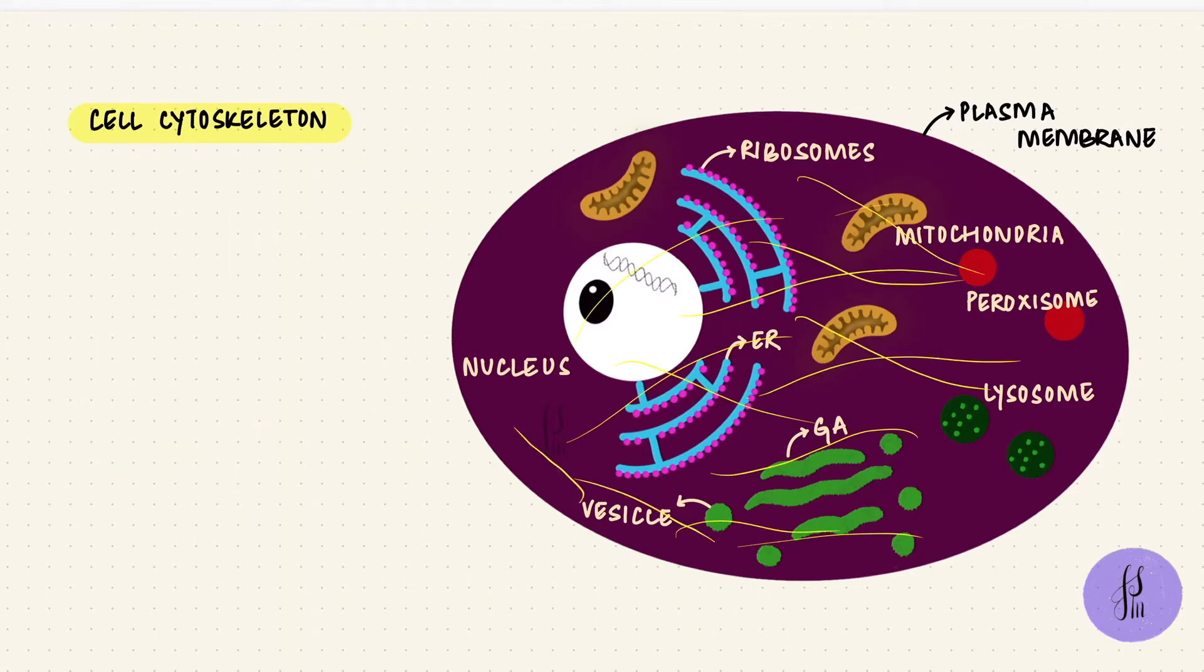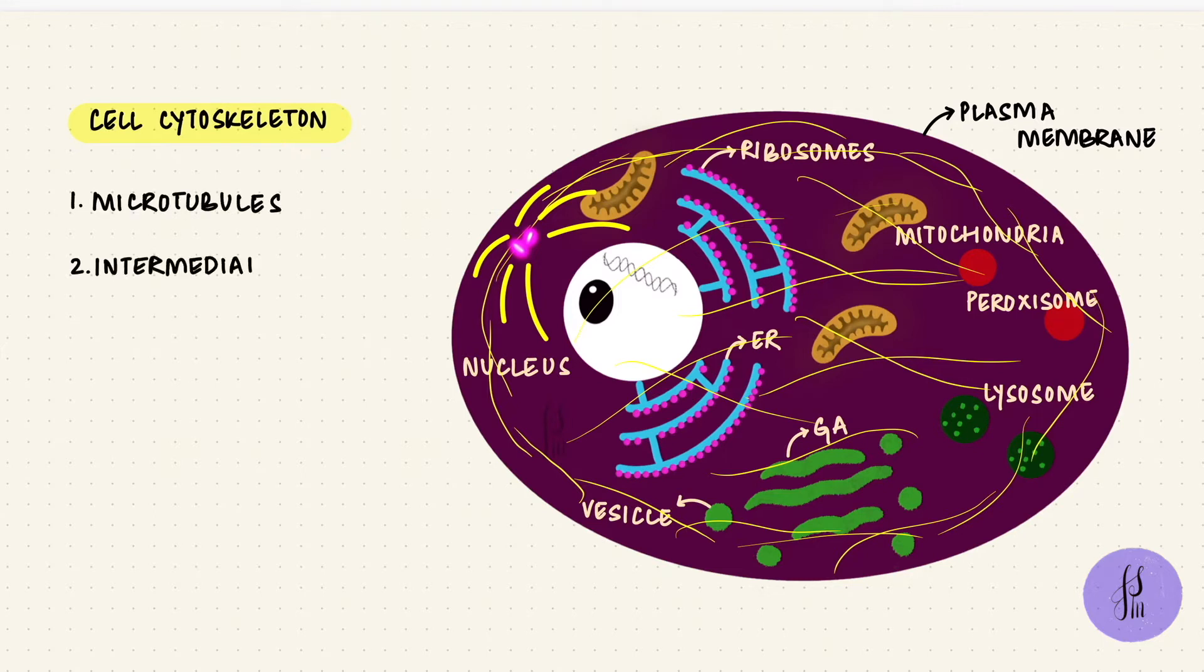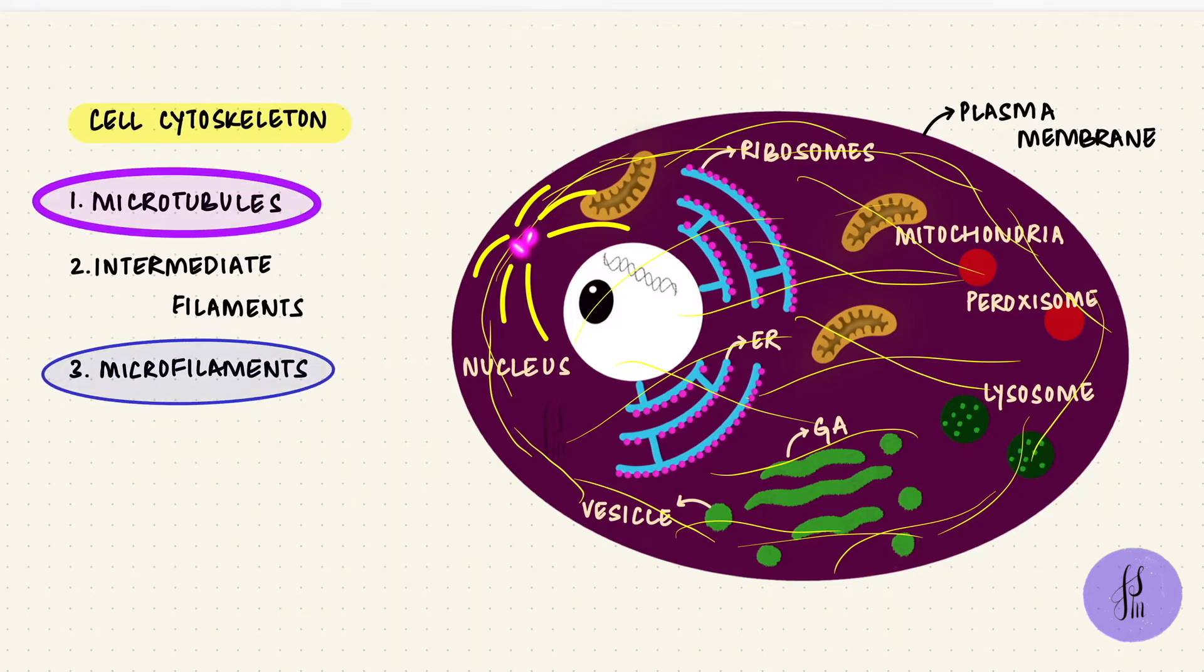The cytoplasm has these protein filaments and tubules running through it that form the cell cytoskeleton. There are three important groups of them: microtubules, intermediate filaments, and microfilaments. Microtubules have the largest diameter and microfilaments have the smallest. In this video we're going to take a look at microtubules, and in part two we'll look at the other two.